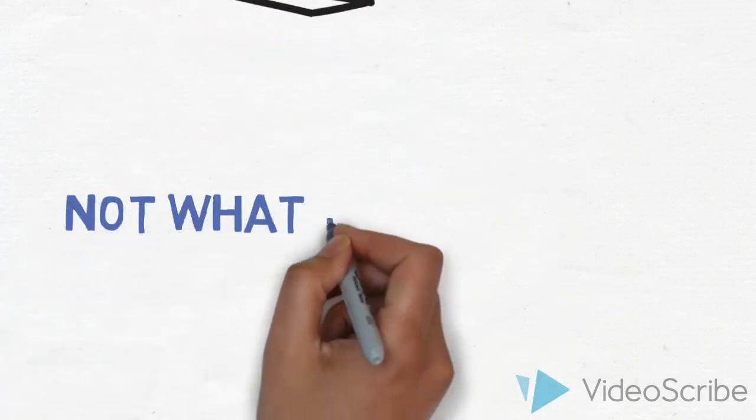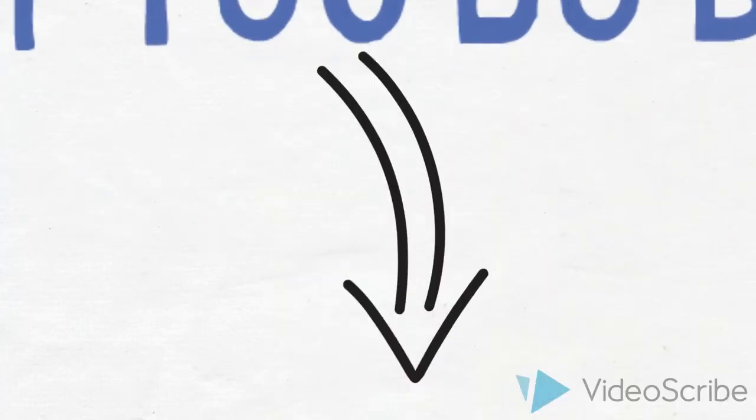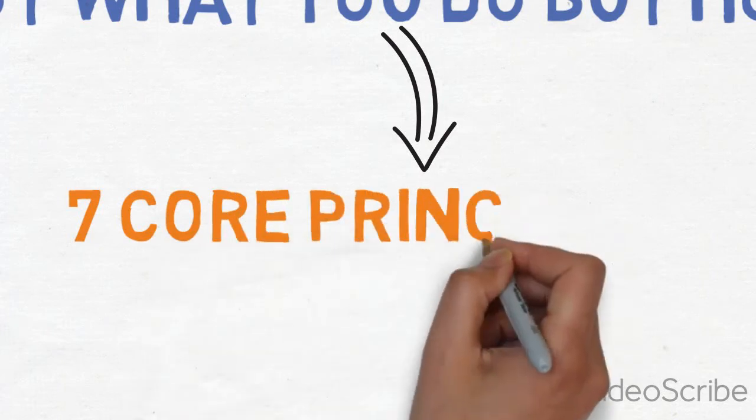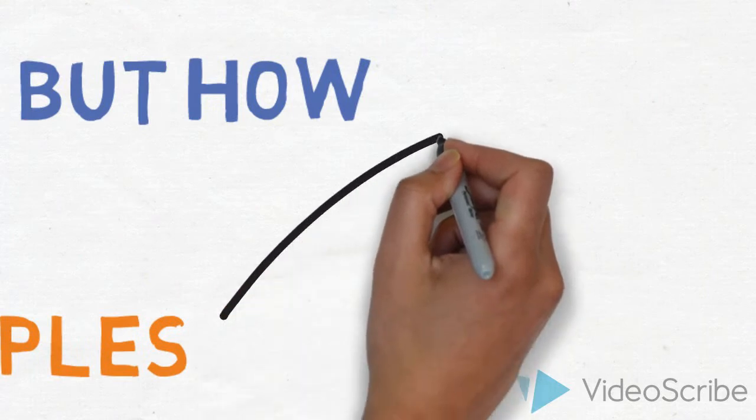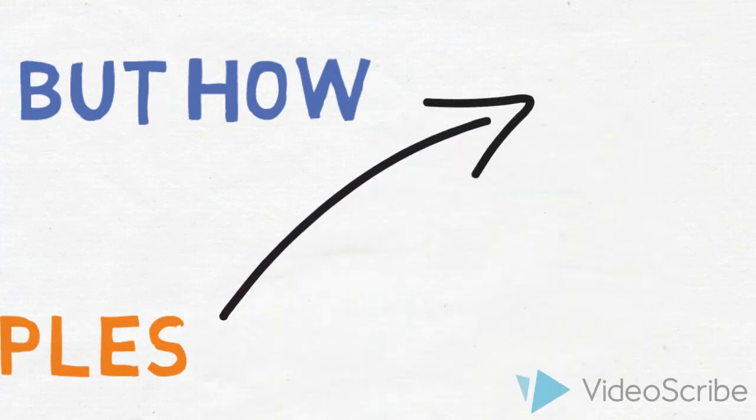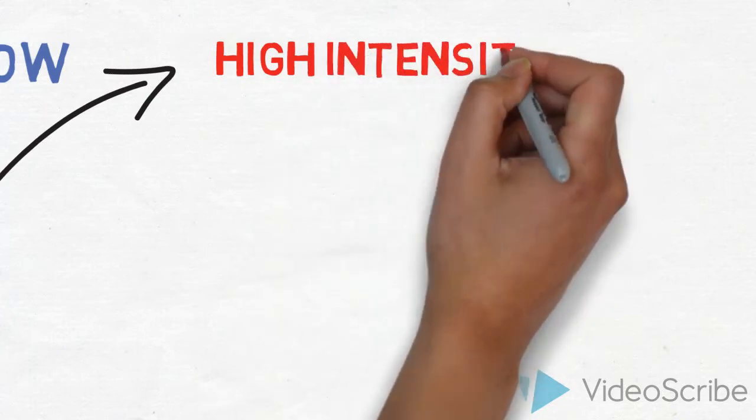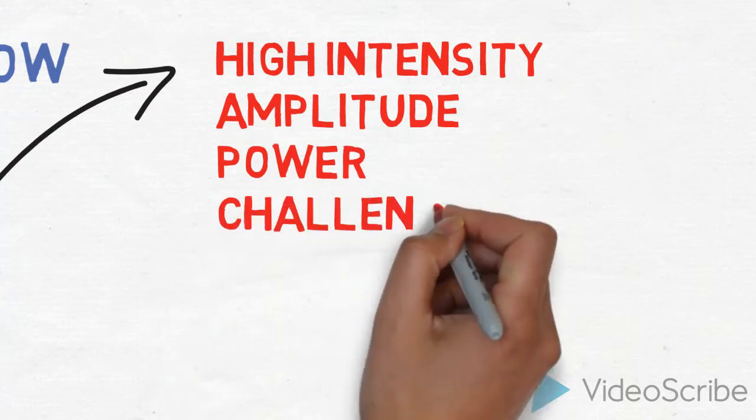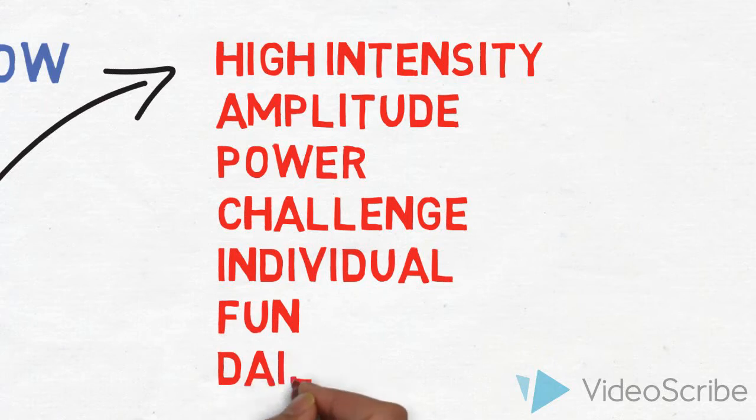When it comes to exercise, it does not matter what you do, it's how you do it. The current evidence is pointing towards seven key principles. If you can try and incorporate these principles into your exercise routine, you'll be starting down the right path. These principles include high intensity, amplitude, power, challenge, individual, fun, and daily.